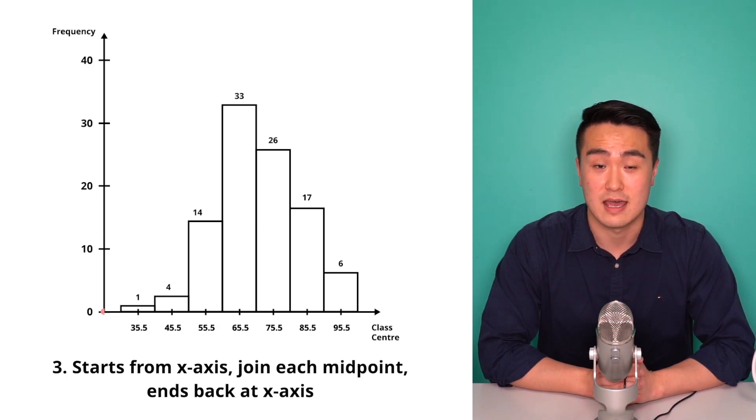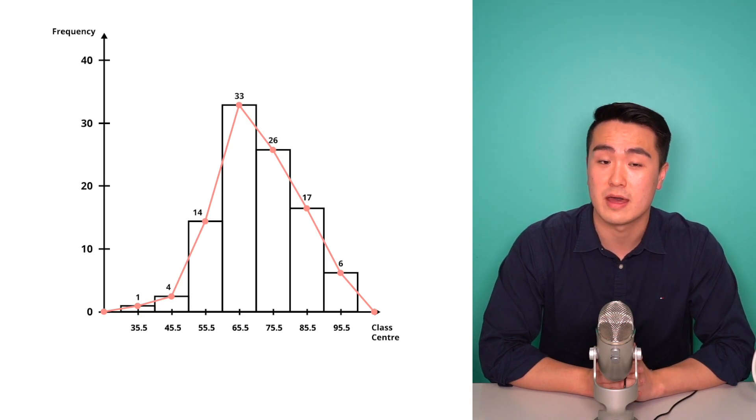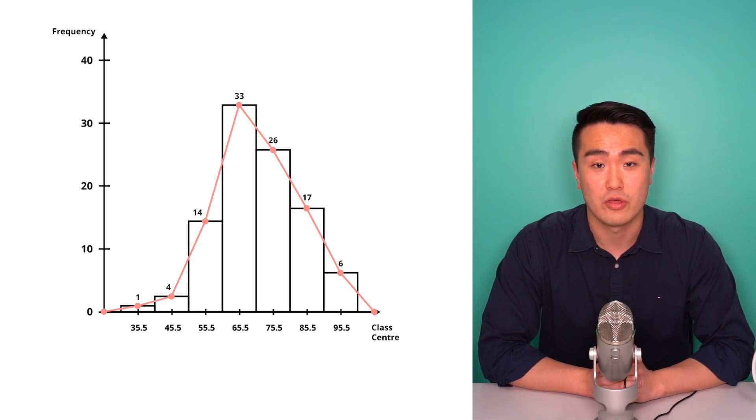Finally, the polygon starts at the x-axis, joins each of the midpoints of the columns and then ends back at the x-axis. So this is what a histogram and a polygon looks like. Although there will be slightly different versions, always follow what your teacher or your school advises first.